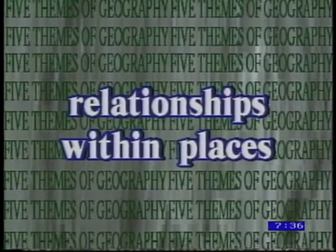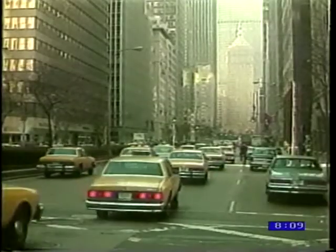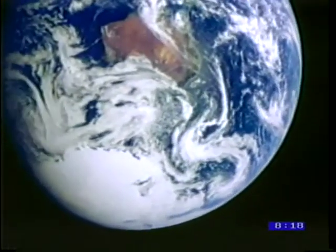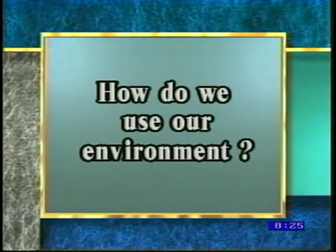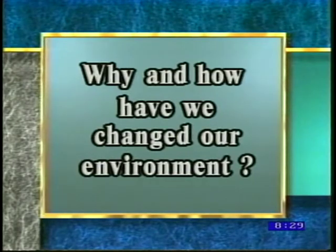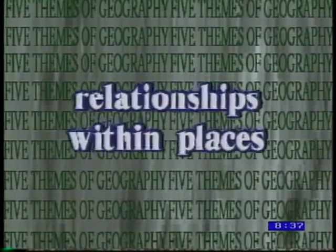Our third theme of geography is relationships within places, also sometimes referred to as human-environment interaction. An environment is defined by scientists as the sum of the conditions that surround and influence an organism. For our purposes, the organism in question is us — the world that surrounds us is our environment. We'll examine this theme by asking: How does our environment affect the way we live? How do we use our environment? Why and how have we changed our environment? And what have been some of the consequences of these changes?